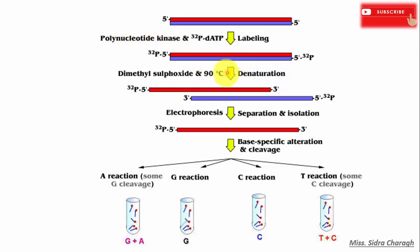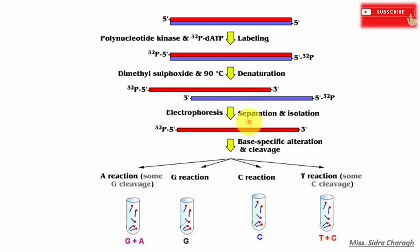After end labeling, the double-stranded DNA is converted into single-stranded DNA by using dimethyl sulfoxide and heating the double-stranded DNA at 90 degrees Celsius. These single-stranded DNAs are then separated through gel electrophoresis and eluted. The radiolabeled single-stranded DNAs are then subjected to chemical treatment.